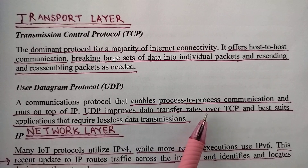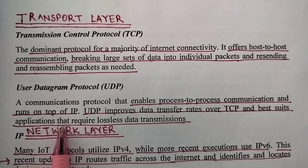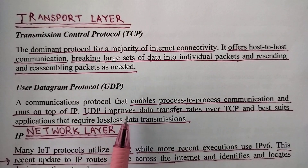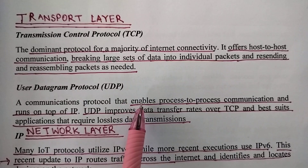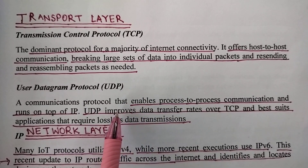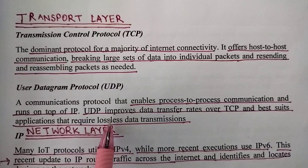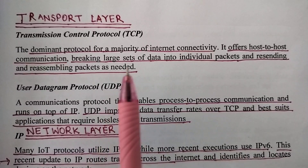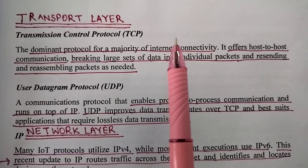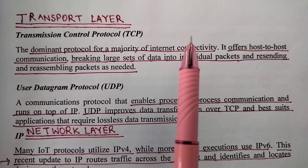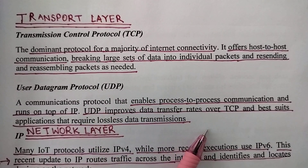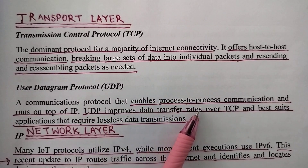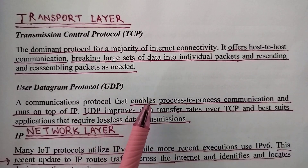UDP improves data transfer rates over TCP and best suits applications that require faster delivery but which can afford a lossless data transmission. Basically, the data transfer rate of UDP is much better compared to TCP. We can say that TCP is a more reliable protocol compared to UDP because TCP uses acknowledgements whereas UDP does not send any acknowledgements. So, when reliability is more important than speed, TCP is preferred, and when speed is more important than reliability, UDP is preferred.